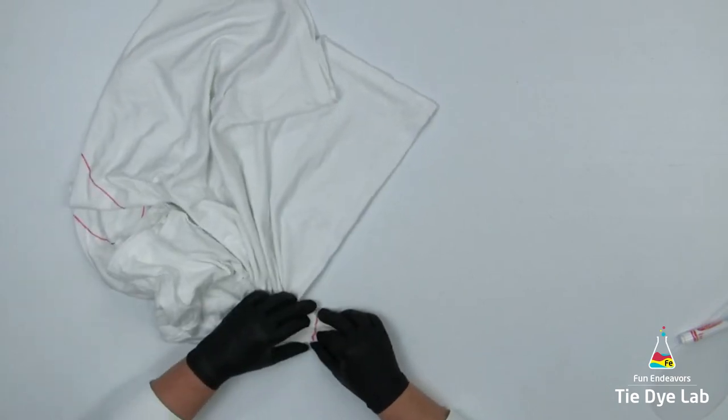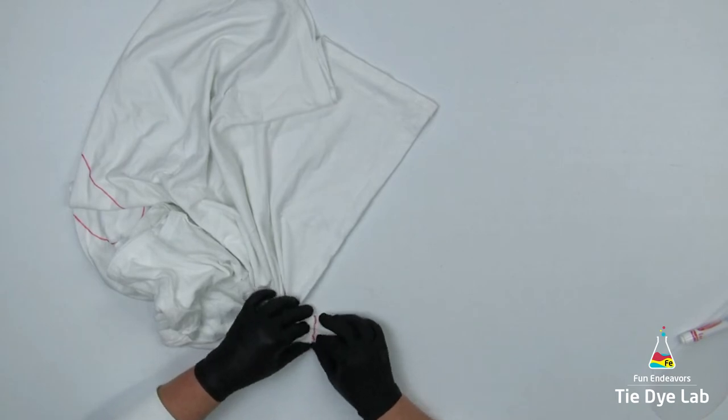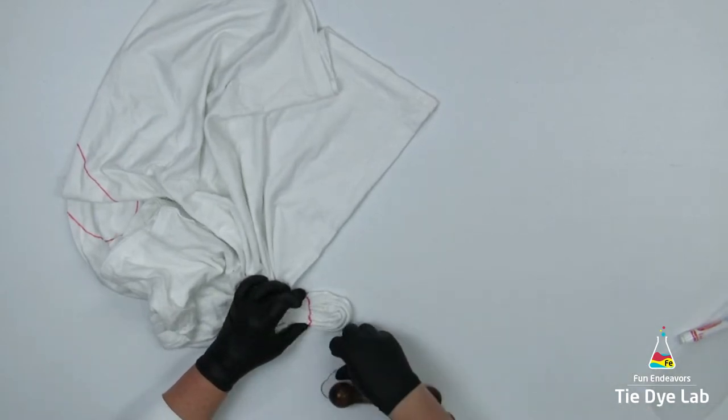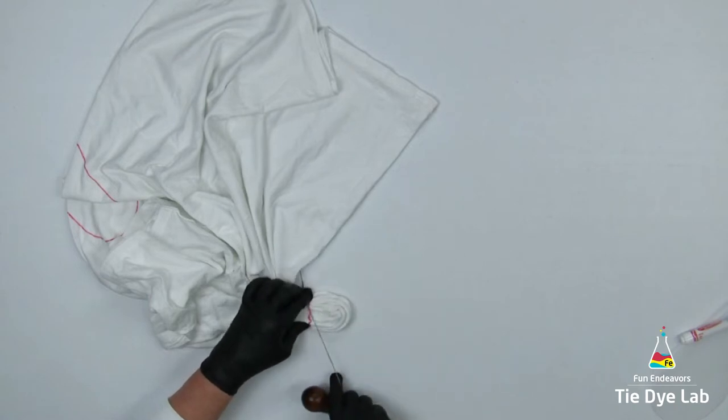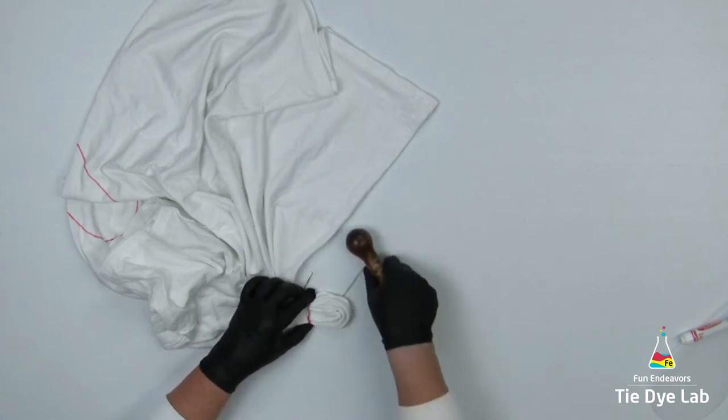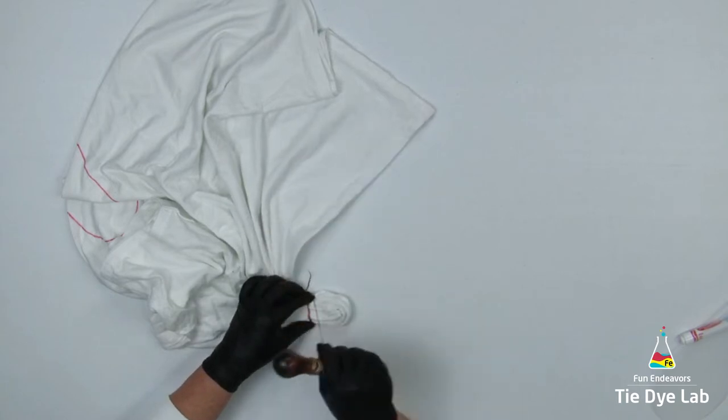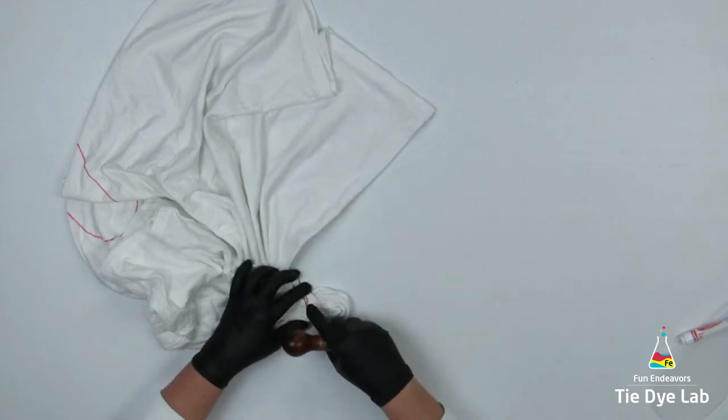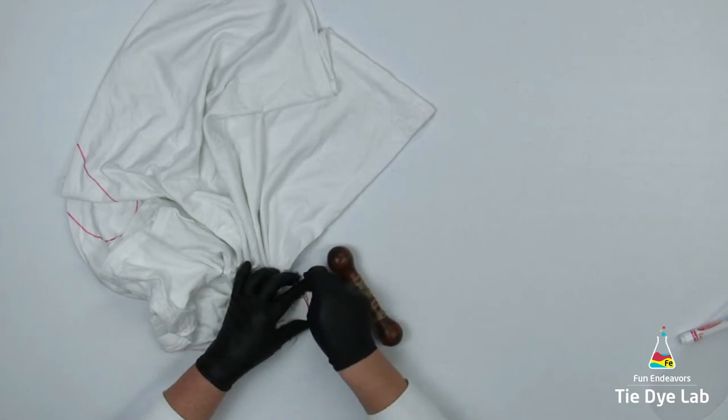Once I'm finished fan folding this line I'm going to tie it up with some sinew. I'm going to place the sinew on the line that I just fan folded and gently begin to tighten it. I want to make sure I don't shift the folds by tightening it too quickly.